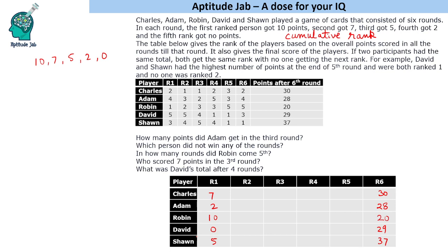Now let us try to connect these two data points. We know round five is a special round because two players had the same number of points, and two others also had the same number of points. In the final round there is a difference of 8 — 37 minus 29 is 8 — so that means one person got 8 extra points in that round.